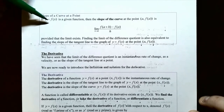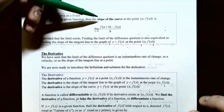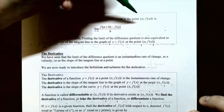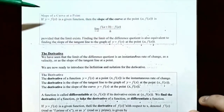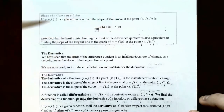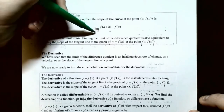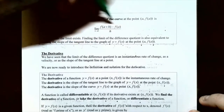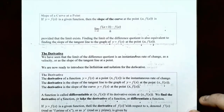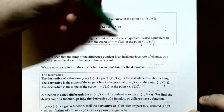The slope of a curve — or slope of a tangent line — at a point (A, F(A)) is defined as the limit as H approaches zero of the difference quotient: F(A+H) − F(A) all over H. The difference quotient alone is called the average rate of change or slope of the secant line. When you attach the limit as H → 0, it becomes the slope of the tangent line, slope of the curve, or instantaneous rate of change at X = A — provided that limit exists.